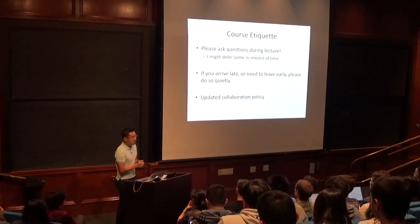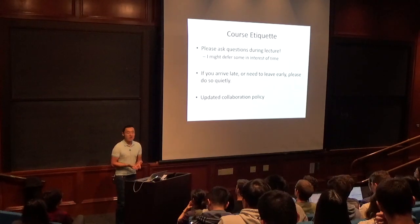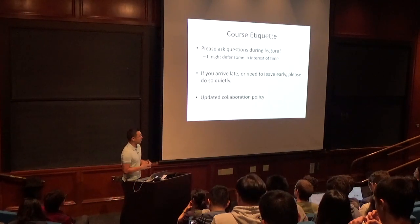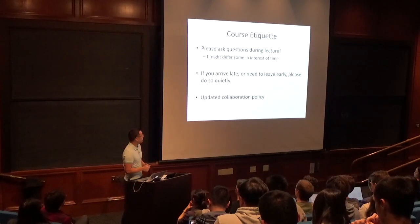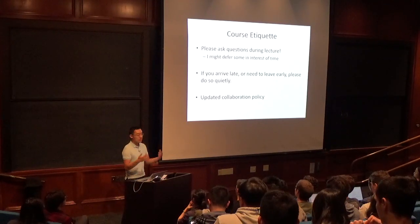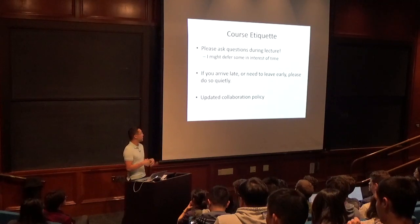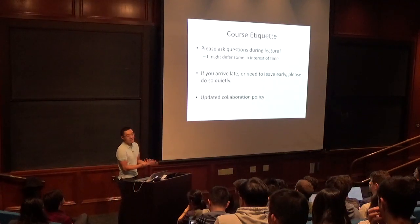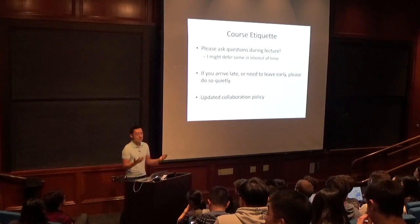We have an updated collaboration policy. The CS department created a new collaboration policy rubric last year, slightly tweaked this year, and CS 155 has adopted it. You can find it on the course website. For homeworks, you can talk to each other, but copying answers is not allowed — observe the 50-foot rule. For mini projects, you work in groups. For the final exam, no collaboration whatsoever.